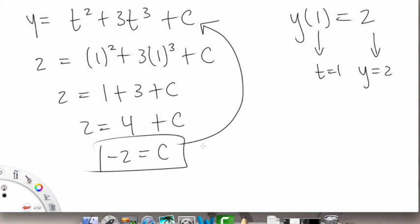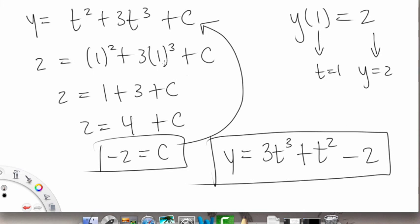Then we end up with the equation y equals 3t³ plus t² minus 2. And that's basically it, this is our specific solution. So that does it for this practice problems video on anti-derivatives and the indefinite integral. I hope that helps and happy studying.